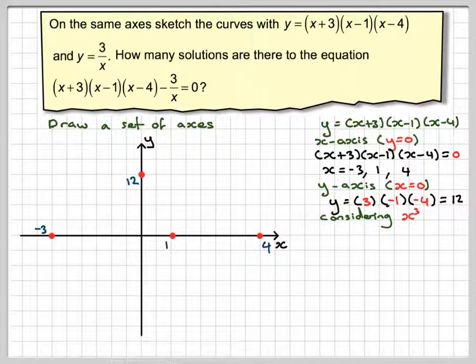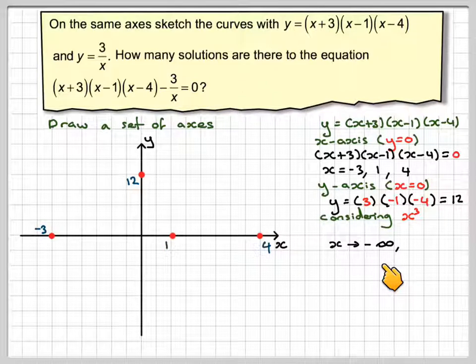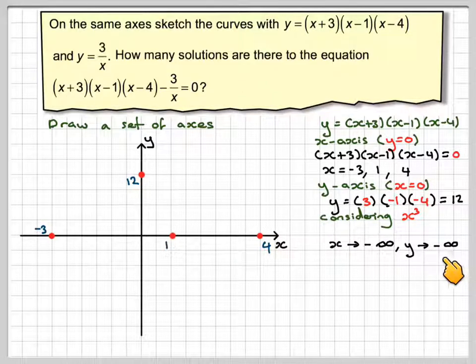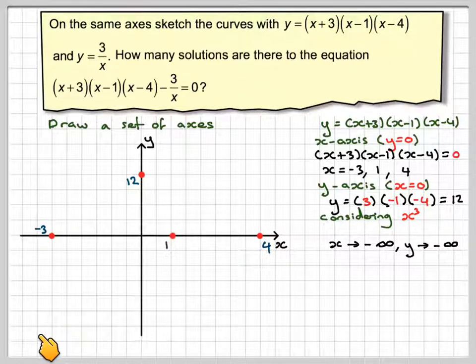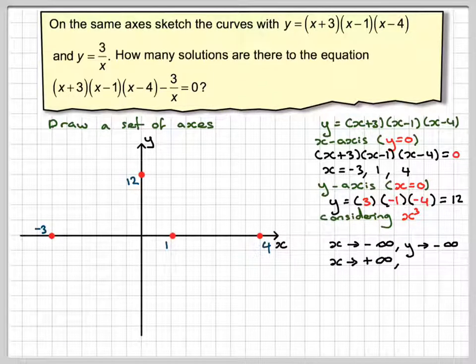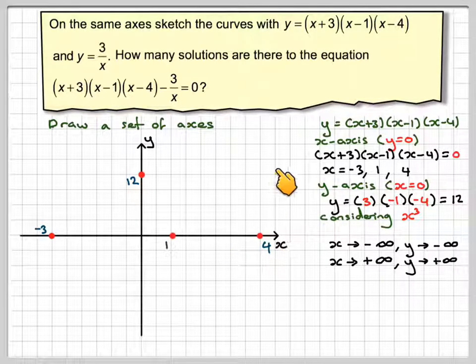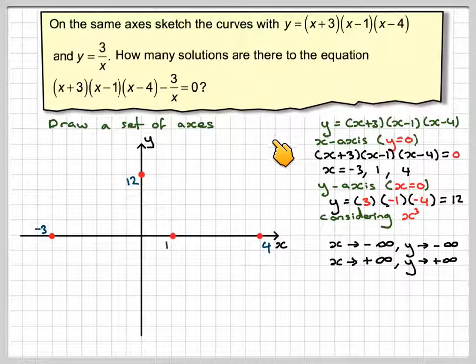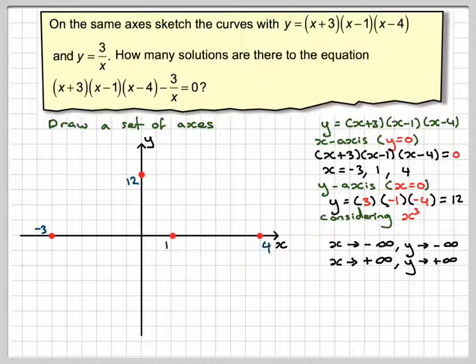Considering the most dominant part, which is x cubed, when x goes to minus infinity, y goes to minus infinity. So it starts down here. When x goes to plus infinity, y will go to plus infinity. So the graph will come up here.